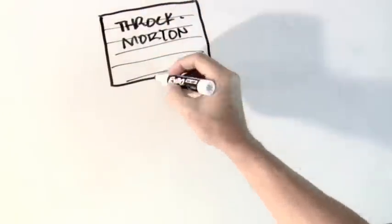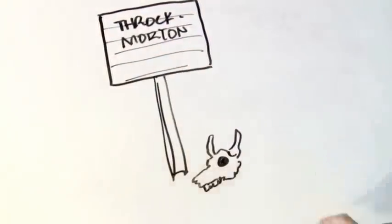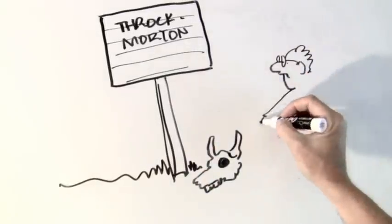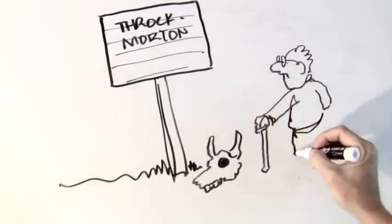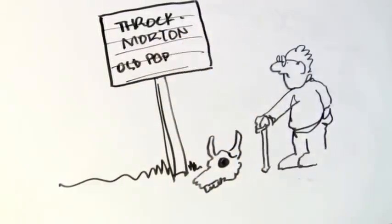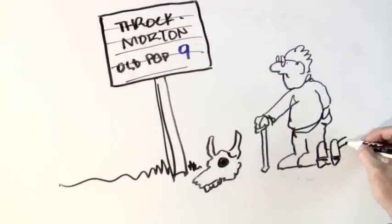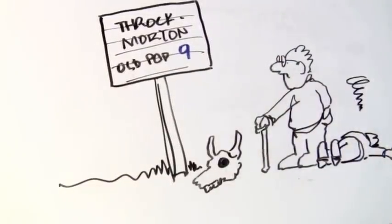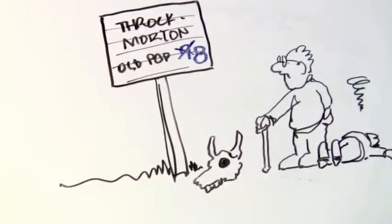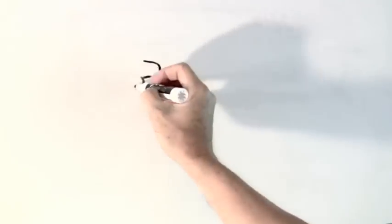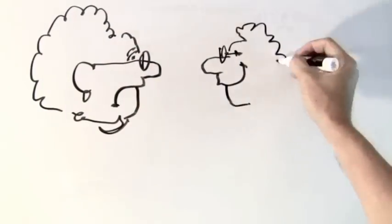If you must live to be 100, please move to Throckmorton County, Texas, about halfway between Fort Worth and Lubbock. You'll have lots of company - about one of every 200 residents of the West Texas county are older than 100. Of course, that's only eight people.